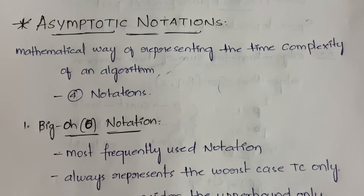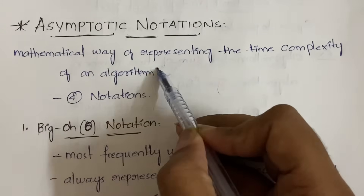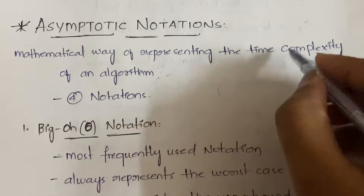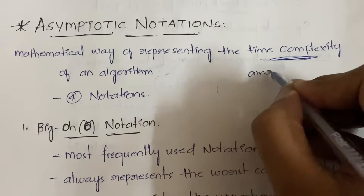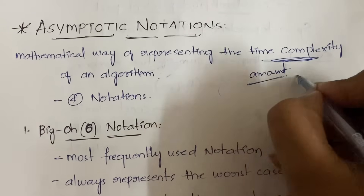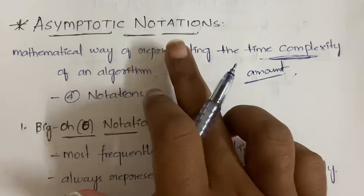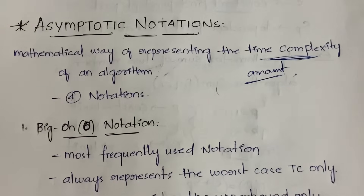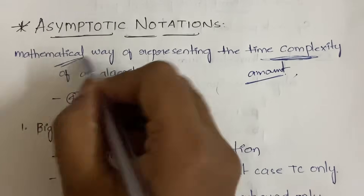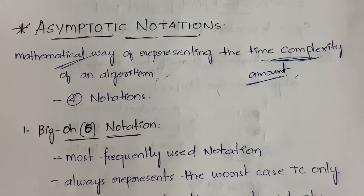First, what do you mean by asymptotic notations? It is a mathematical way of representing the time complexity of an algorithm. Time complexity is the amount of time an algorithm takes for its execution. By using asymptotic notations, you are measuring the time complexity of an algorithm mathematically.